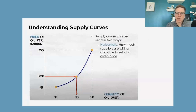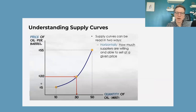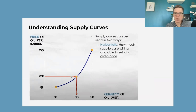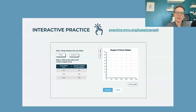We have the horizontal reading of curves and the vertical reading of the curves. The horizontal reading basically says: at this price, how much are suppliers willing and able to sell? The vertical reading asks: to produce this given quantity, what's the minimum price they would need?